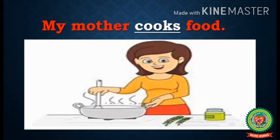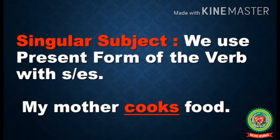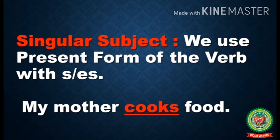First example is: my mother cooks food. Children, I will tell you, if the subject is singular, we use the present form of the verb with s or es. In the given example, you can see the subject 'mother' is singular, so we have used s with the present form of the verb, that is 'cook'.